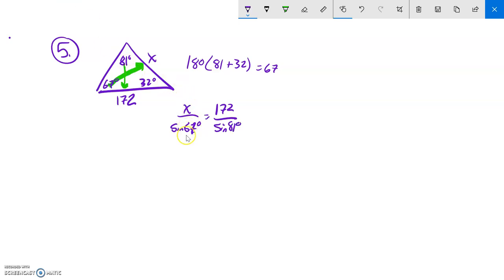And I'm solving for x. So I have this sine 67 in the denominator. So I'm going to multiply both sides by sine 67 to get x all alone. So x would equal this multiplied by sine of 67, sorry, not 167, of 67 degrees divided by sine of 81 degrees.